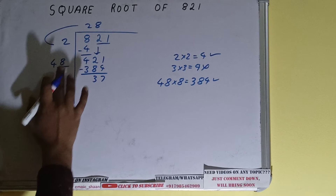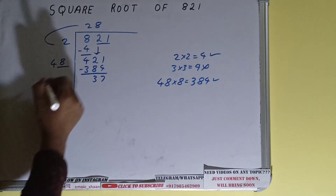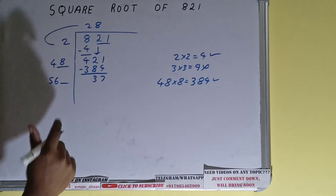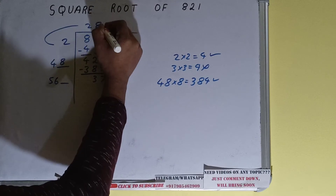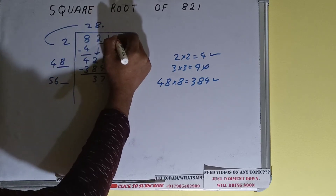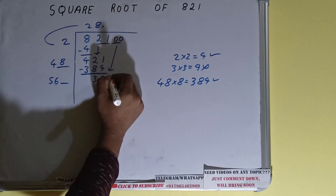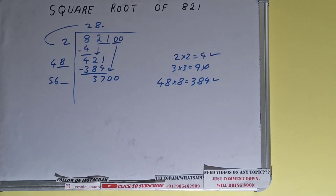Subtract 384 and 37 will be left. Now 48 into 8 we did, so add both: 48 plus 8 will be 56, and 1 digit extra. This number we need to make it big but we don't have more pairs, so we will put a decimal. Once we put the decimal we can bring down a pair of zeros.